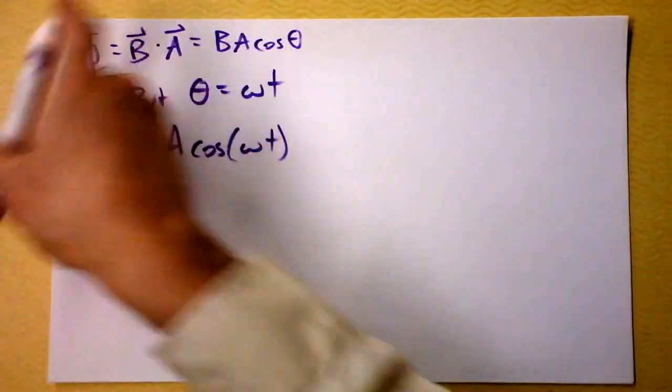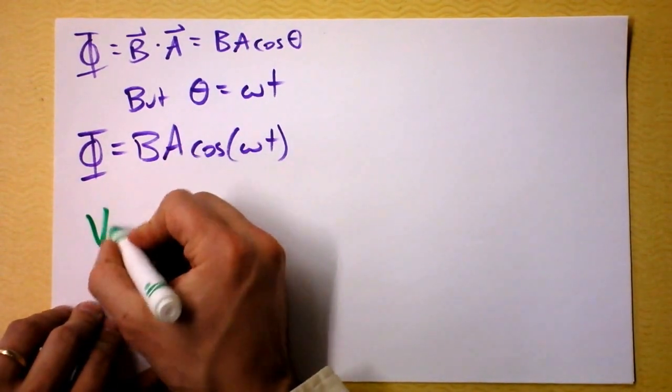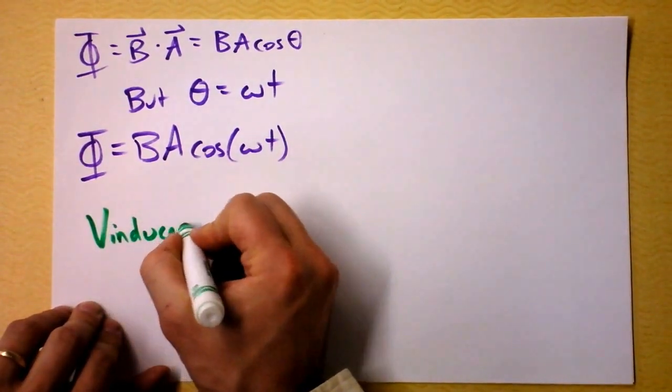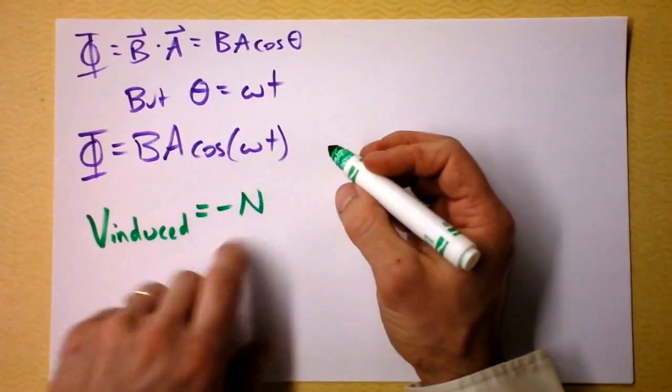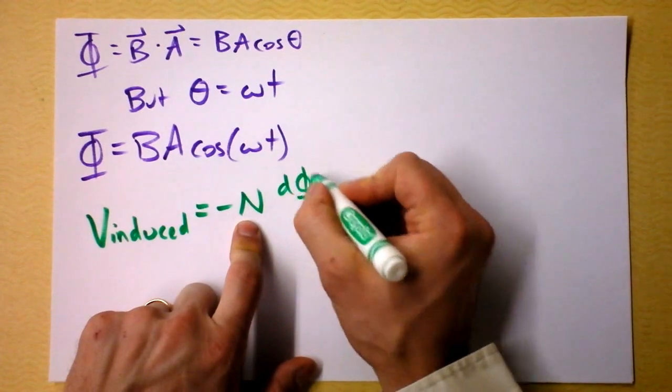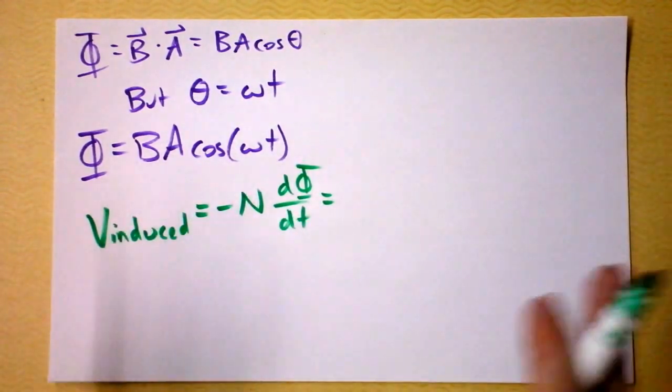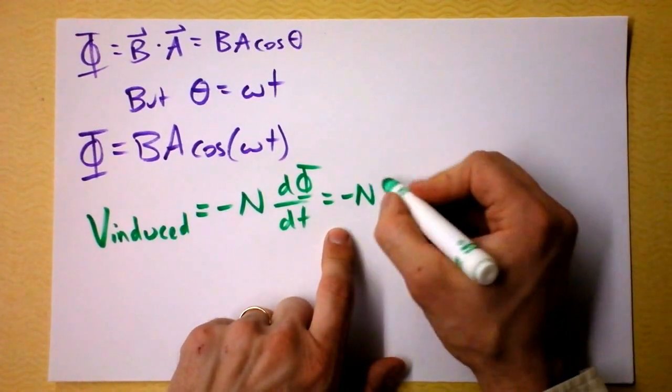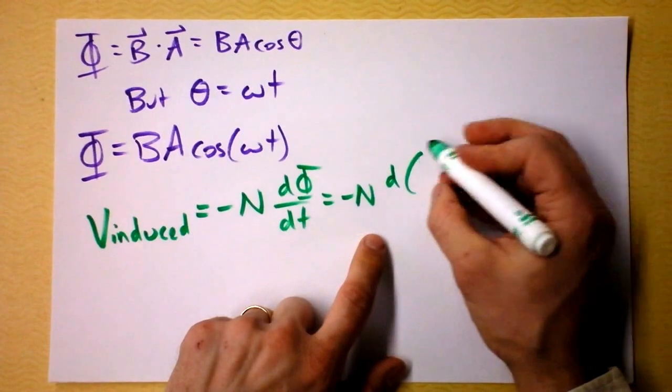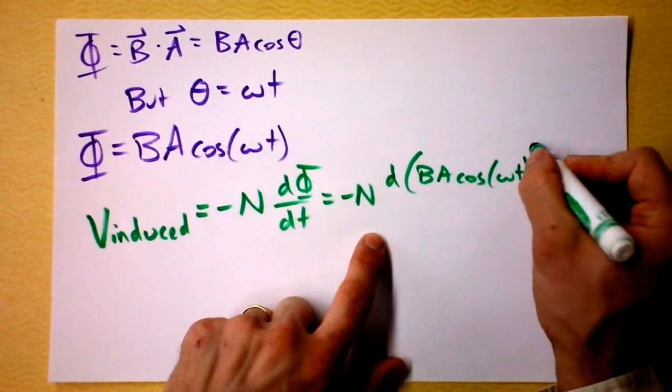And you know already, let's switch colors, I'm getting bored of purple. You know already that we can induce a voltage by saying negative N times d phi dt. And this, strictly speaking, requires a very careful application of the derivative because we've got negative N times all the derivative of all this stuff: B, A, cosine, omega, t.